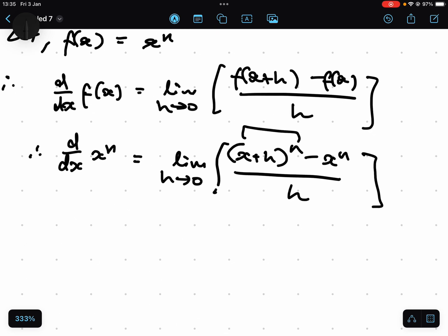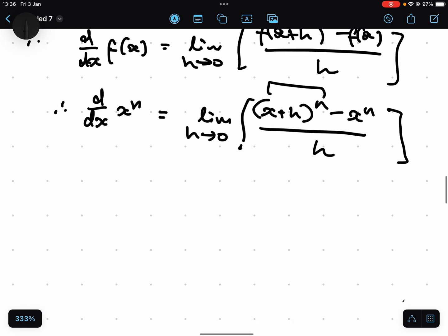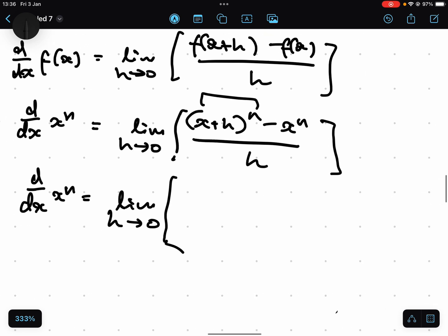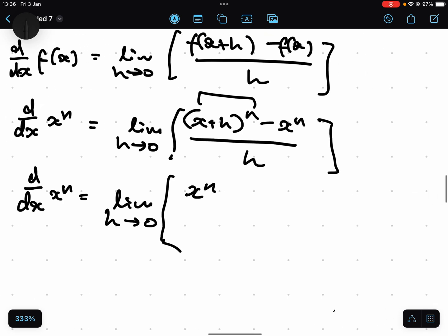And when you've got that, we can use the binomial expansion. So let's remember the binomial expansion. I'm not going to write it out in sigma notation, I'm going to write it simply. So we're going to write it like x to the n plus, and then next time is going to be x to the n minus one times h on the next part.